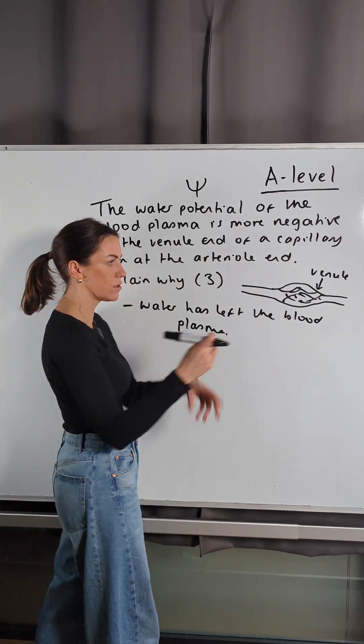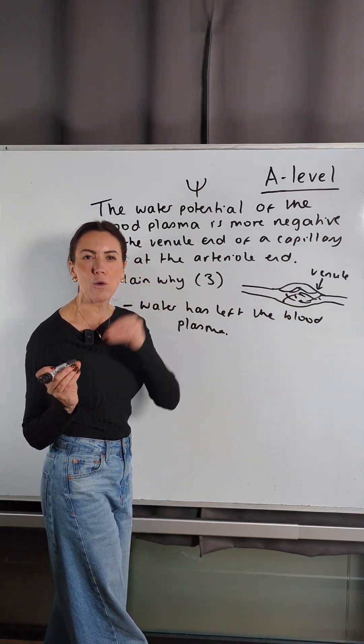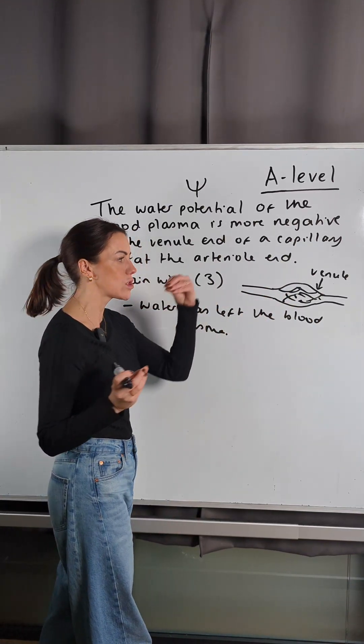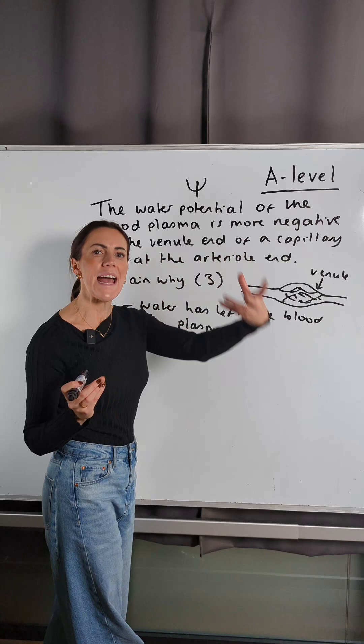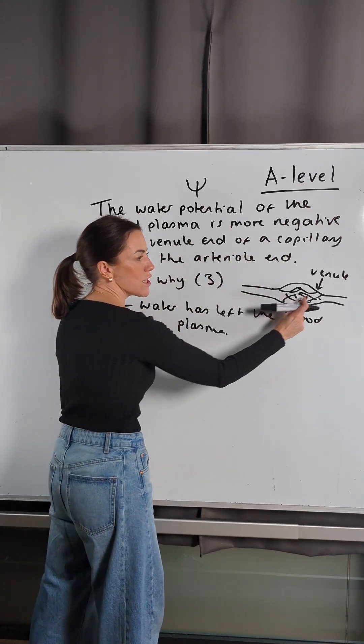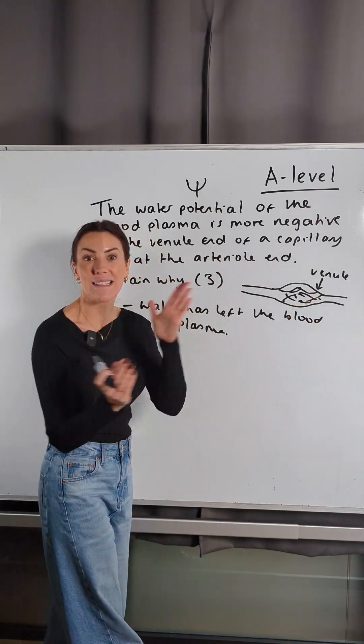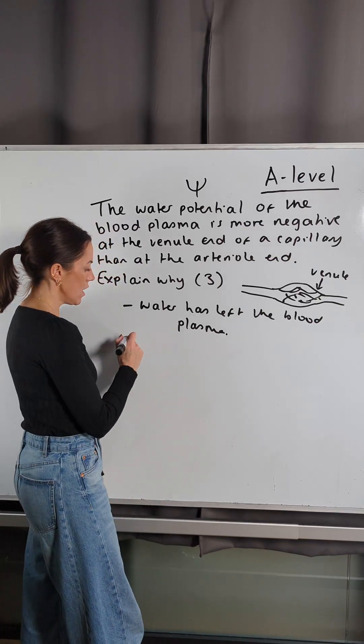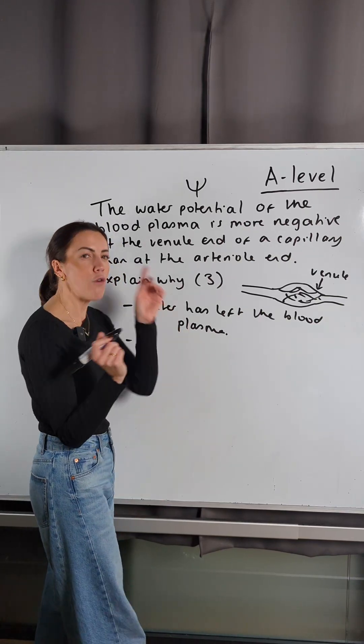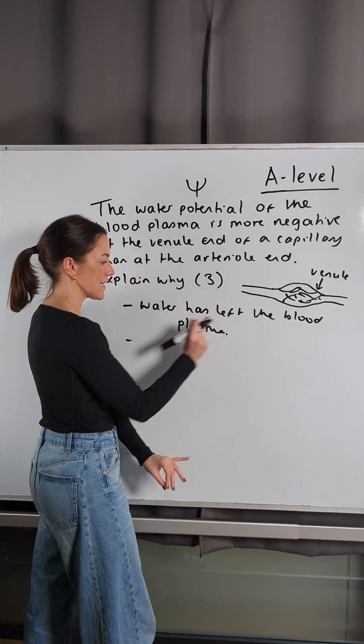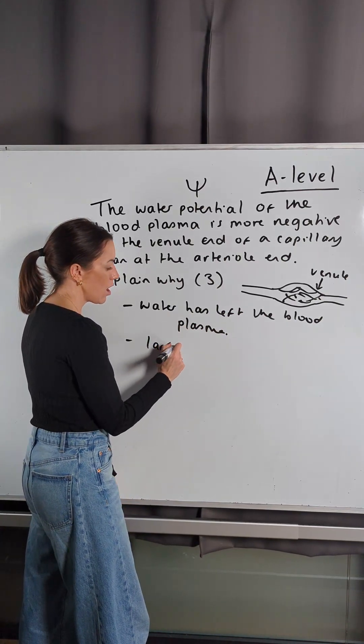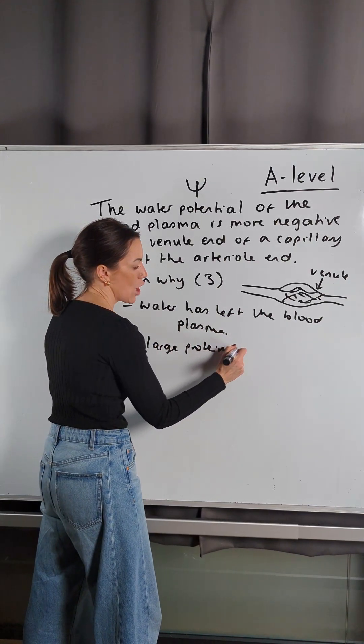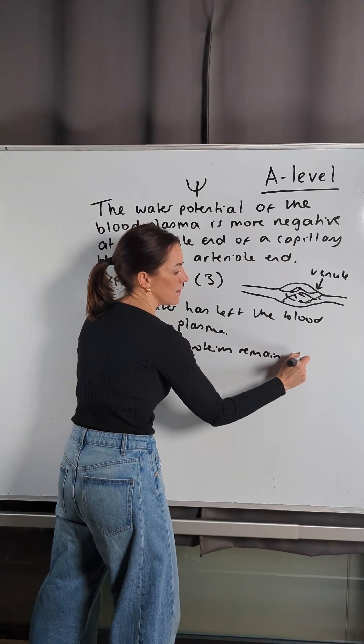So there's less water because you've got high hydrostatic pressure here, because of the contractions of the ventricles, it's going to force water out of the capillaries. It's going to move out through the endothelium, through their walls. So by the time you get down here, the blood plasma has less water.